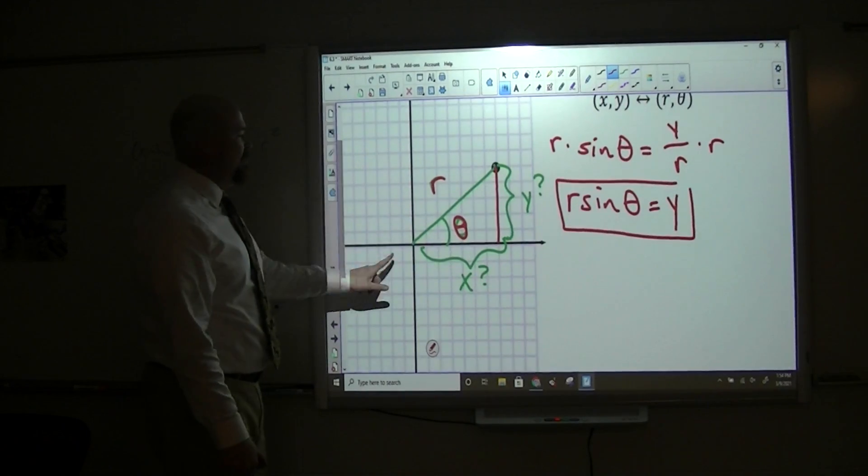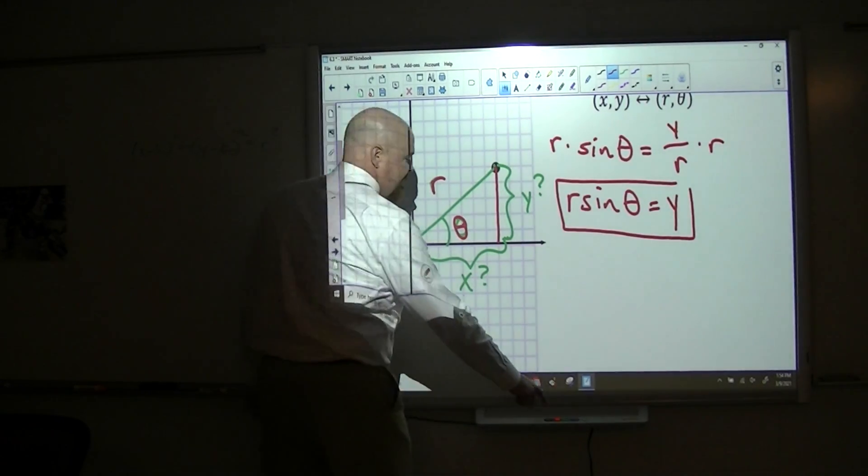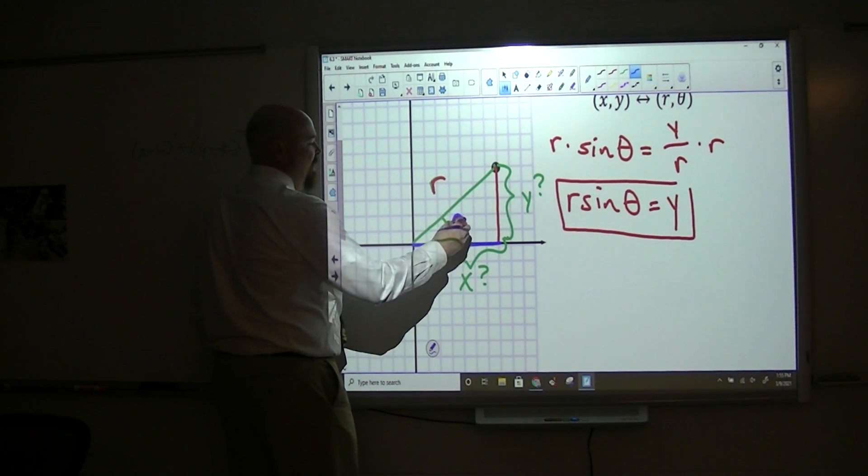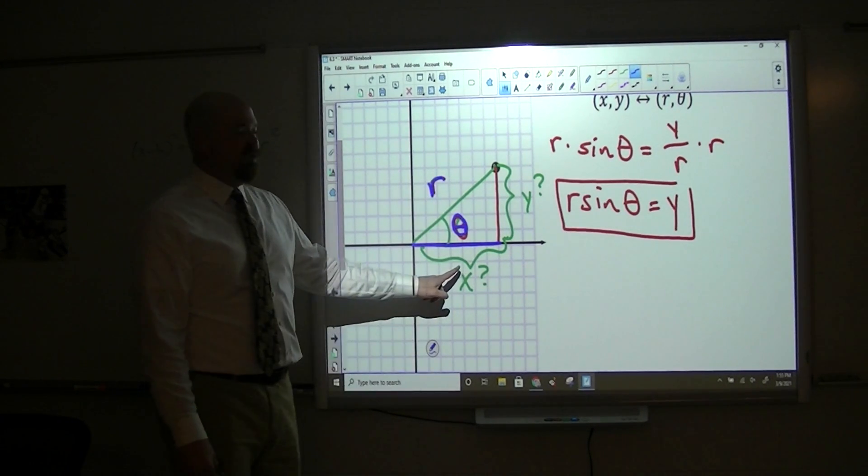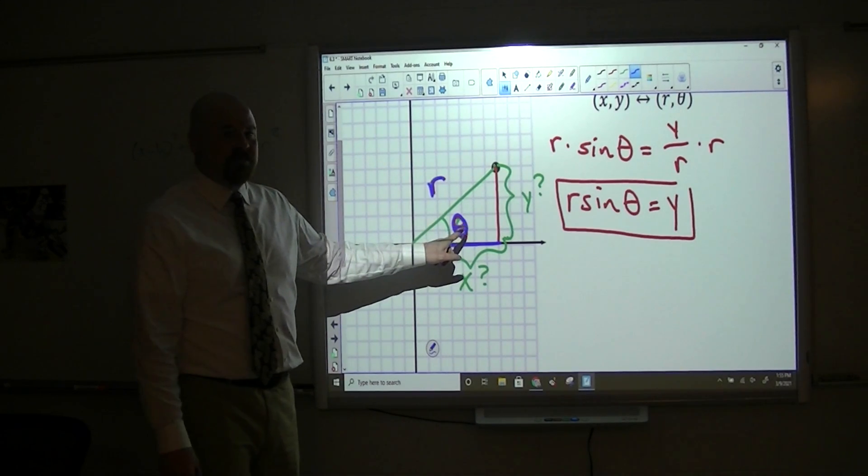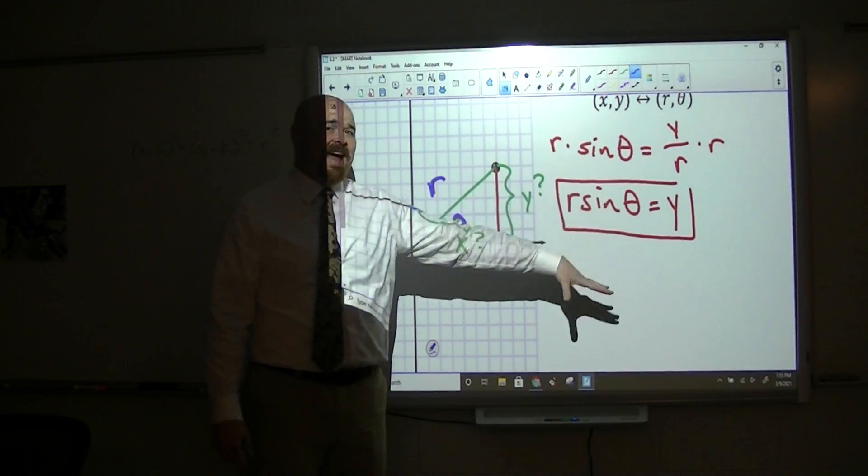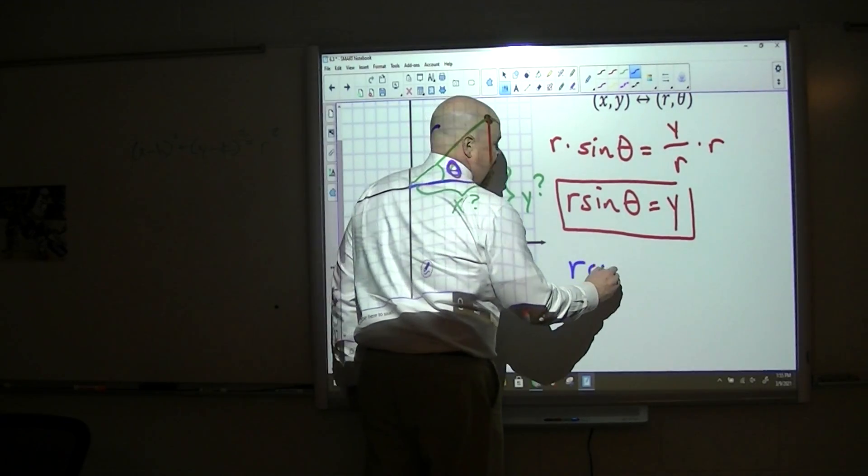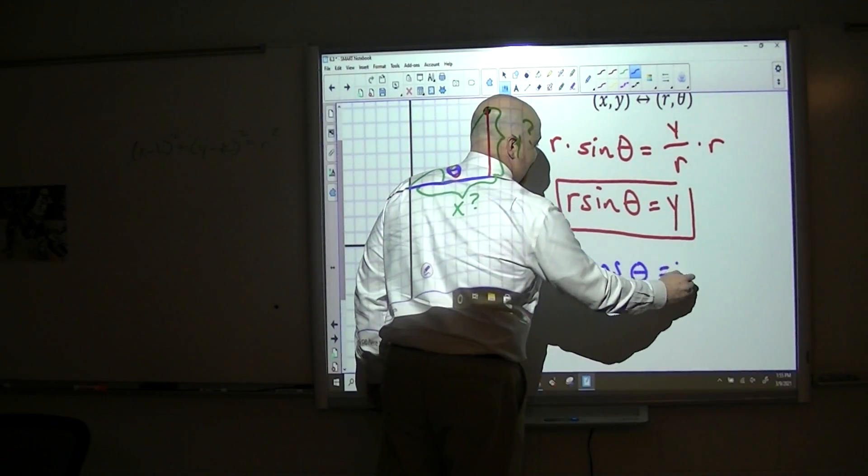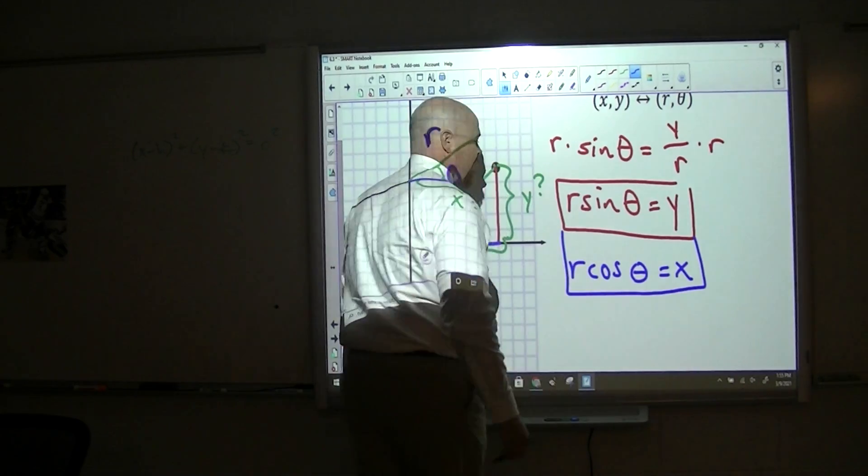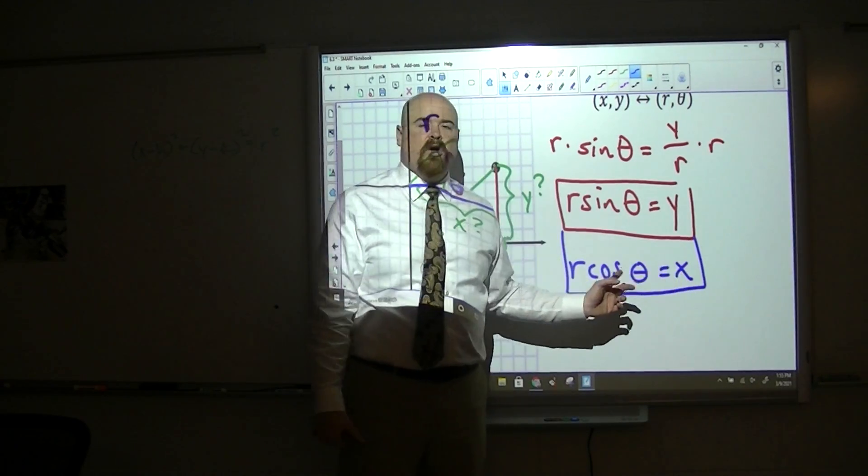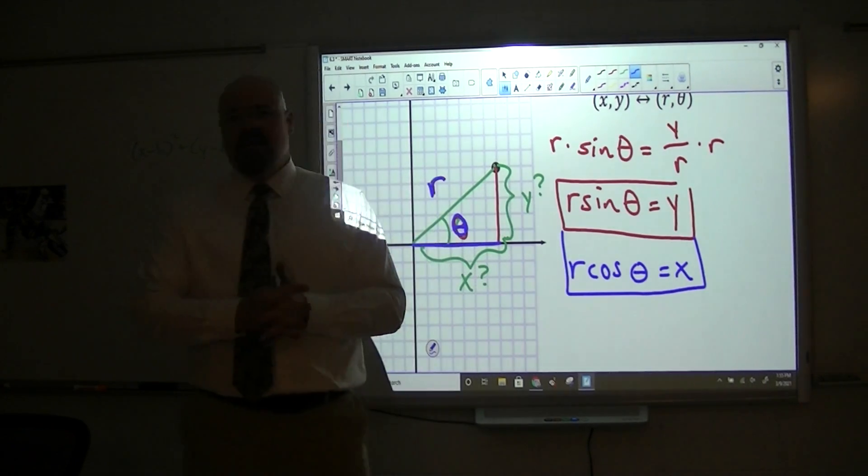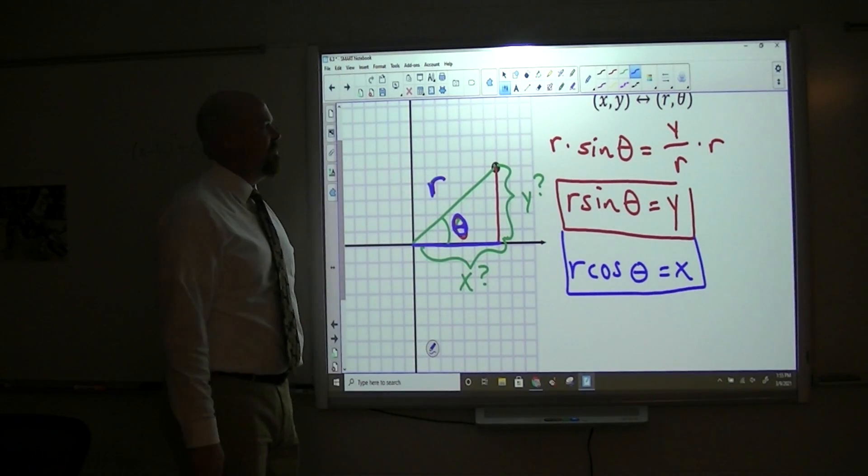Okay, now what would we do to find x? It'd be nearly the same thing, right? If I want to find x, and I know theta, and I know r, this would be the adjacent side of that angle. So it would be essentially the exact same setup, but instead of sine, what are we talking about? You guessed it. That sort of sisterhood between x and cosine and y and sine. Those are connected values in this Cartesian coordinate system.